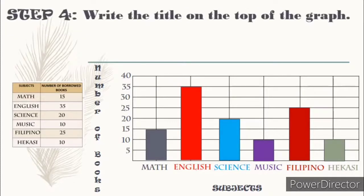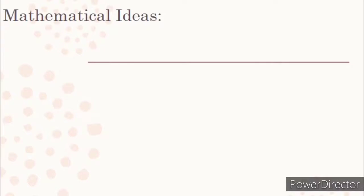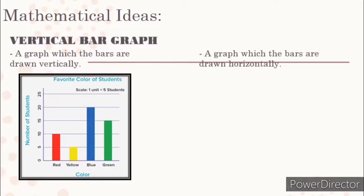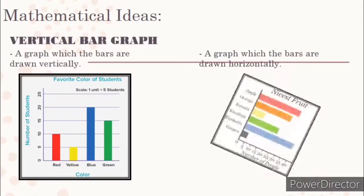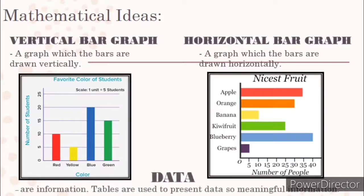Step 4: Write the title on the top of the graph. Based from the problem, this graph is entitled Books Borrowed from the Library for the Month of June. Now let's sum up everything with our mathematical ideas. A graph in which the bars are drawn vertically is called a vertical bar graph. A bar graph in which the bars are drawn horizontally is called a horizontal bar graph. Inside the bar graph are the data — these are the informations. Tables are used to present data so meaningful information.